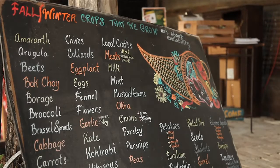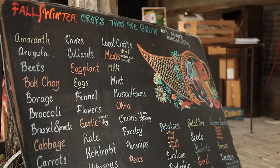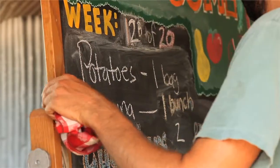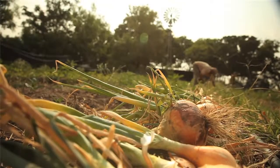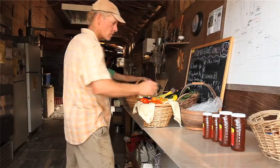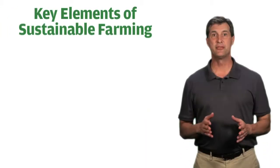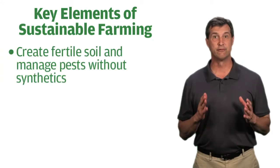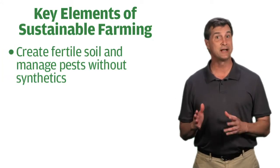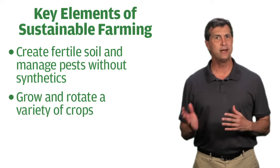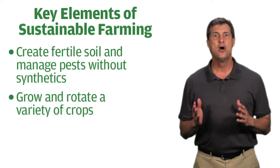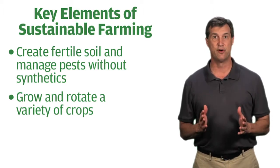They enhance soil structure and encourage beneficial biological activity that improves plant health. They sustain those fields by raising a variety of crops and rotating them. That practice not only improves soil, it reduces pests and provides an economic cushion if one crop fails. Creating fertile soil, managing pests without synthetics, and rotating a variety of crops are the key elements of sustainable farming.